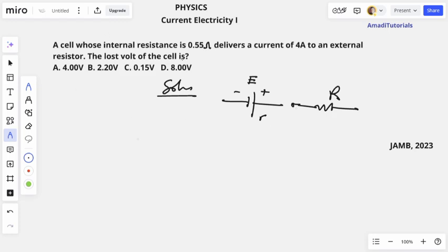So now they say whose internal resistance equals to 0.55 ohms, delivers a current I of 4 amps to an external resistor. Calculate the lost volts.